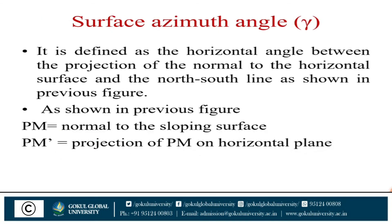Surface azimuth angle — most important definition. It is defined as the horizontal angle between the projection of the normal to the inclined surface and the north-south line, as shown in the figure. In the figure, PM is the normal to the sloping surface and PM-dash is the projection of PM on the horizontal plane.